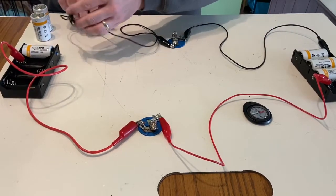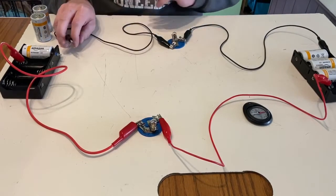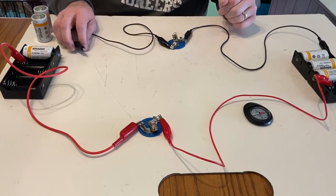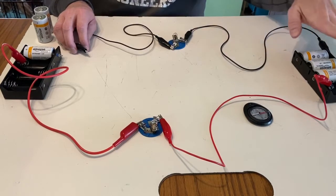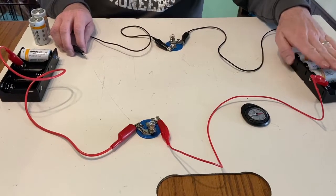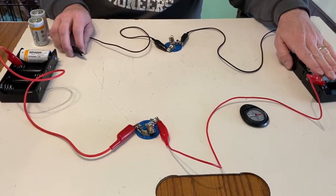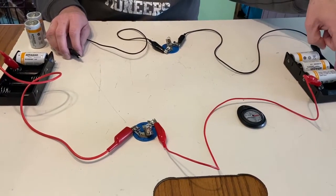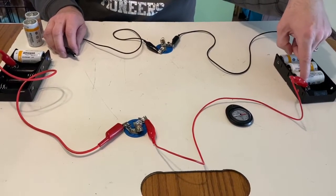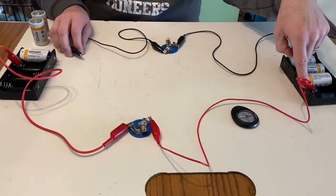And something that is very worth paying attention to for circuit B is the orientation of the batteries. So circuit B, on the three-cell battery, my positive end of the battery is here.